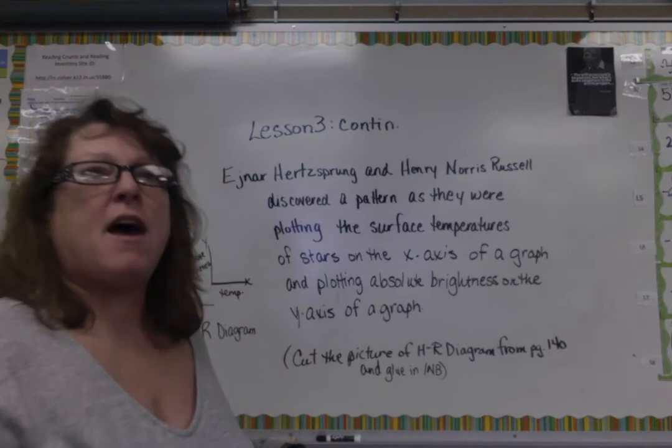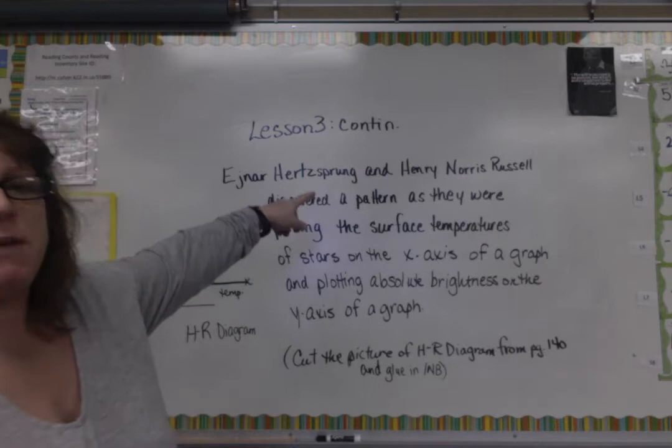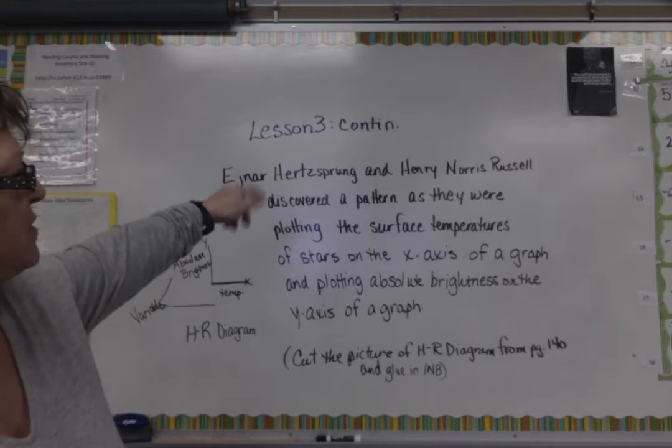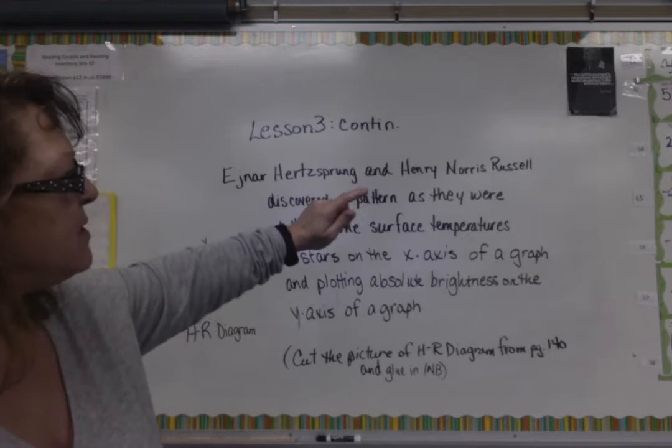We've got Einar Hertzsprung. He's from Denmark, and he was graphing in one of his studies. And then we have another guy who is from the United States. His name was Henry Norris Russell, and he was also doing some graphing of the stars.